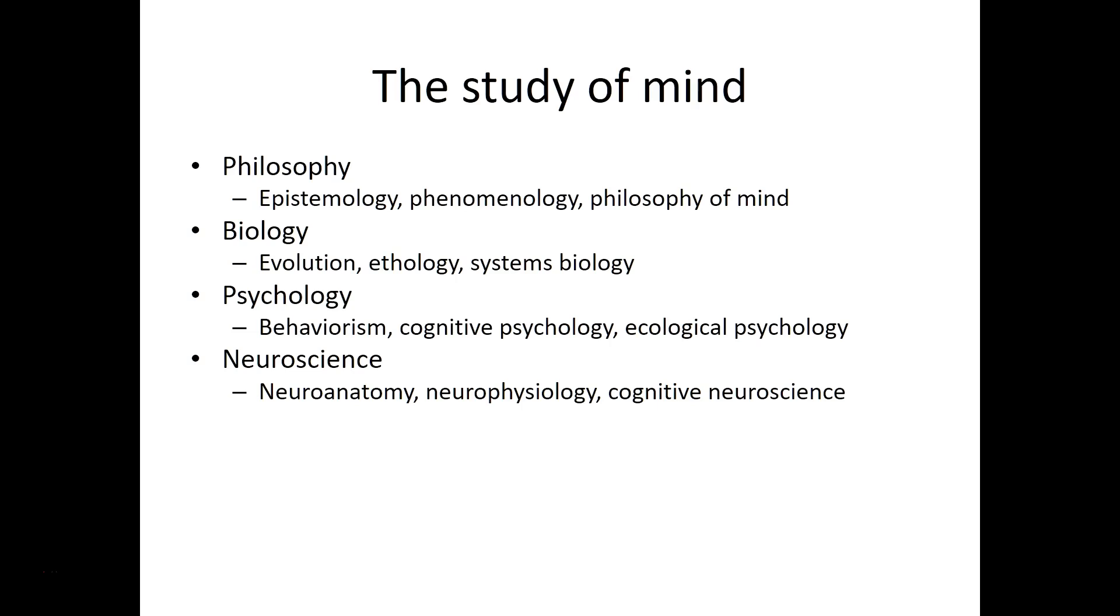John von Neumann and Norbert Wiener were among those who foreshadowed the computer's potential for investigating and understanding mind, giving rise to applications including artificial intelligence, artificial neural networks, machine learning, and many others.